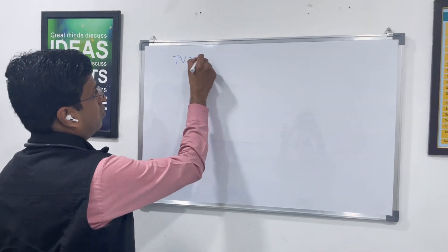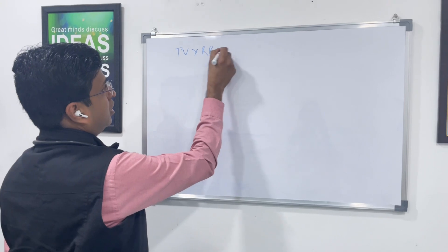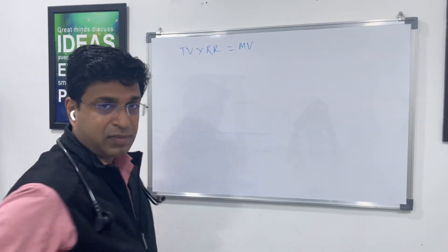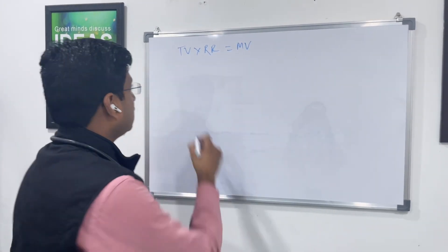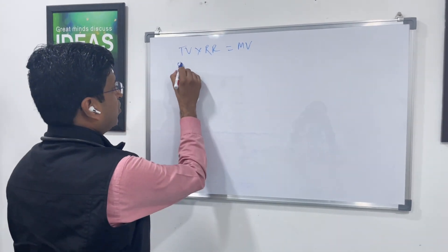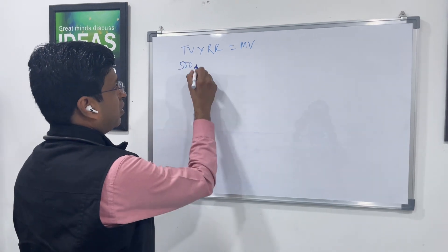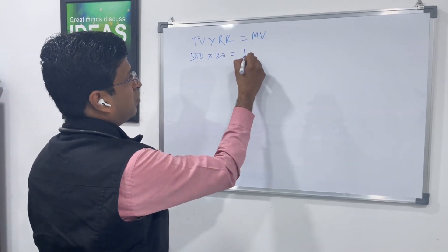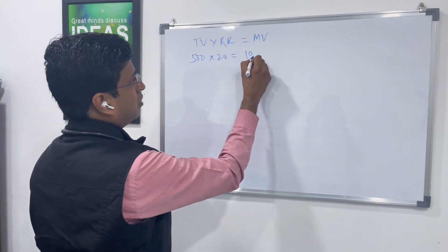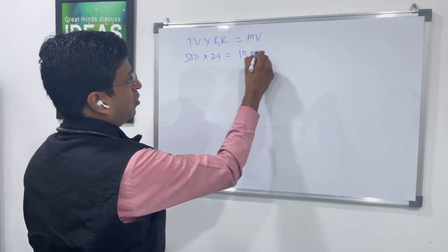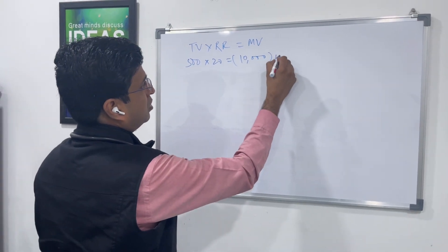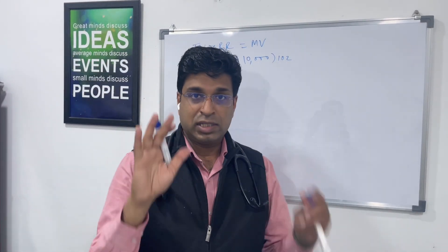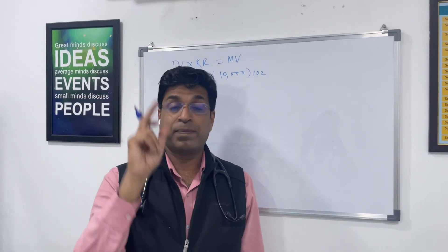Minute ventilation equals tidal volume multiplied by respiratory rate. Normal tidal volume is approximately 500 mL, with a respiratory rate of 20, giving a minute ventilation of 10,000 mL — that is, 10 liters. So this is the minute ventilation the patient is having.